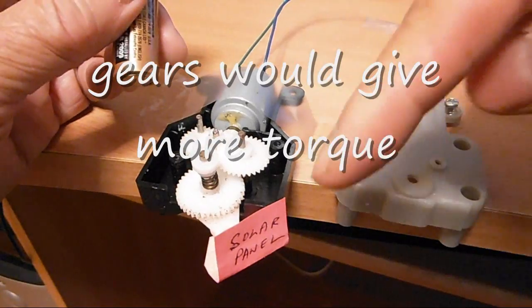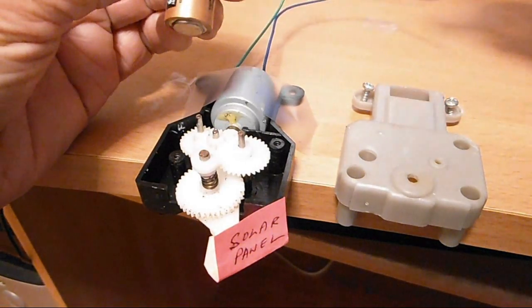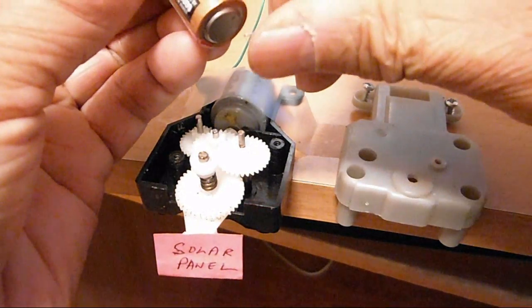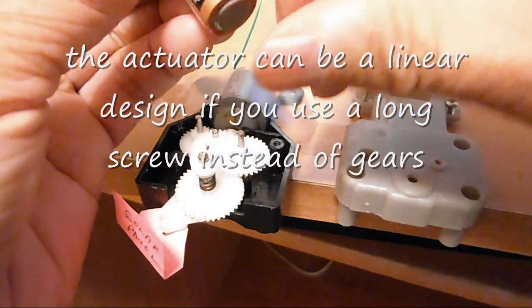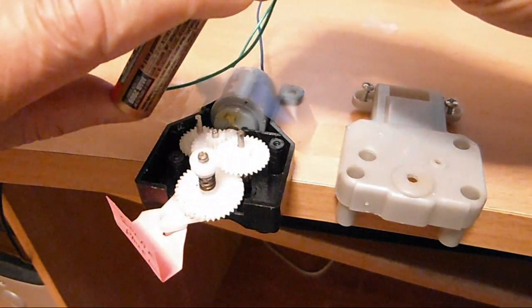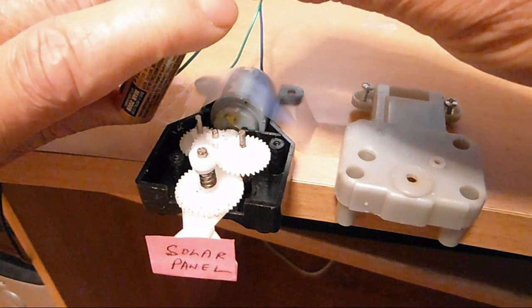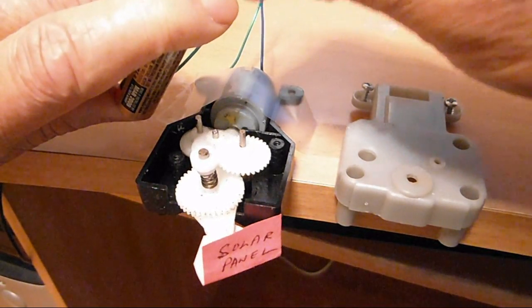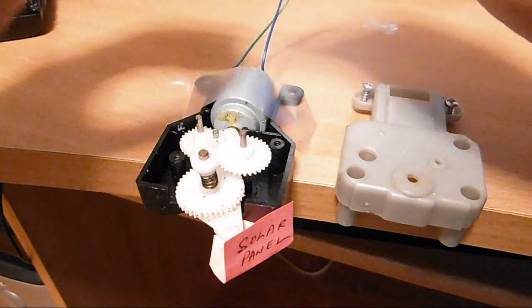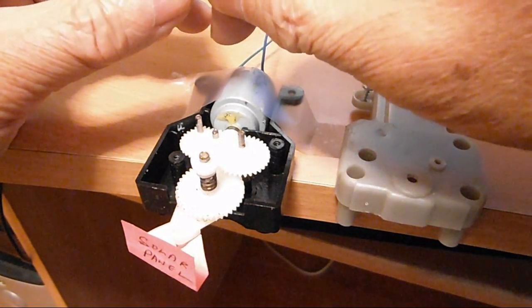When you power it on, the actuator would move from one side or another depending on how you apply the charge. So this is moving from one side and if you reverse the polarity, the actuator moves the other way, sort of like a solar panel actuator.